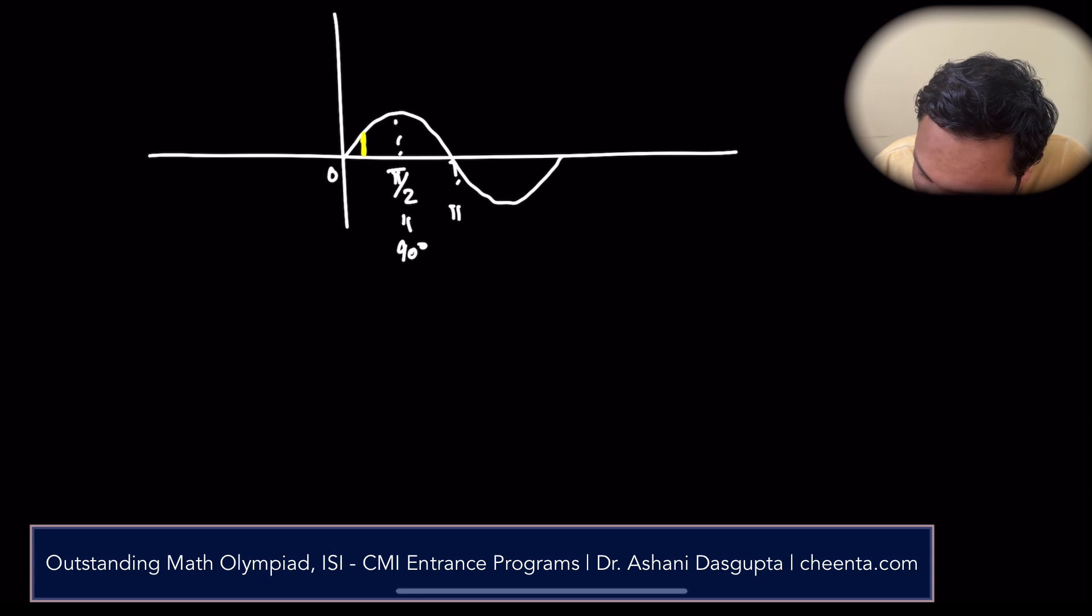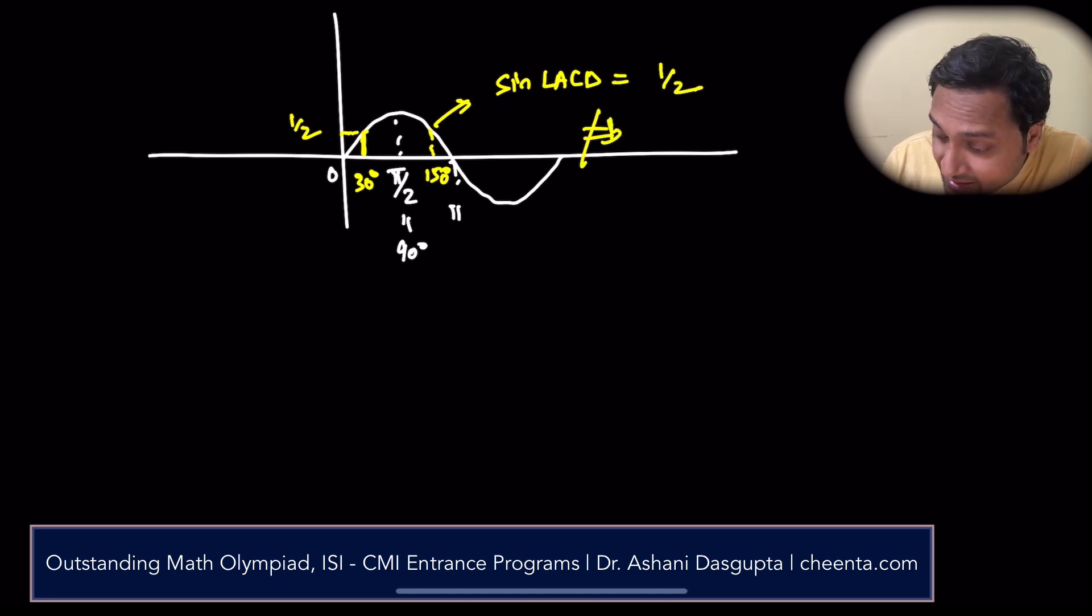Of course, at x equals 30 degree, we have half. Sine of 30 degree is half. But so is sine of 150 degree. Of course, it's an angle of a triangle. It cannot be more than 180 degree, but it could be 150 degree.